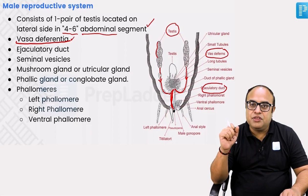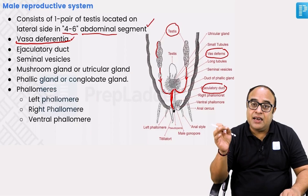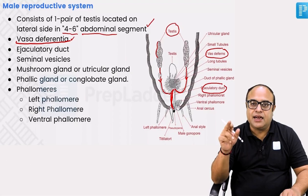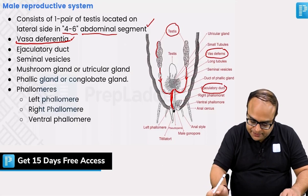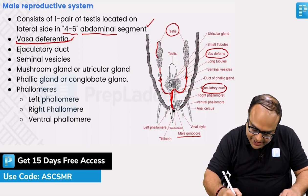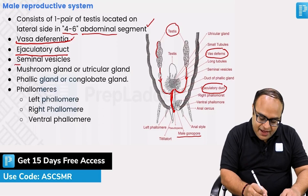Similarly, in the cockroach, when the vas deferens from both sides of the testes meet at a common point, and there are secretions of conglobate glands and mushroom glands, these vas deferens are known as the ejaculatory duct, which opens outside through the male genital pore. This is the male gonopore, opening in this portion.